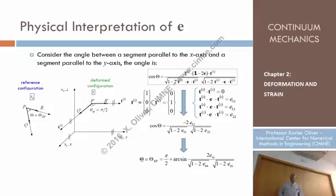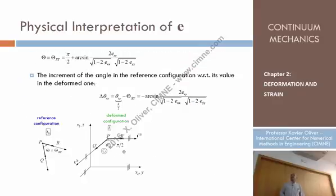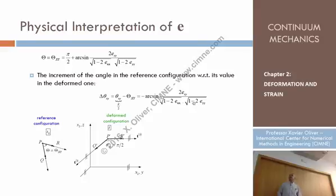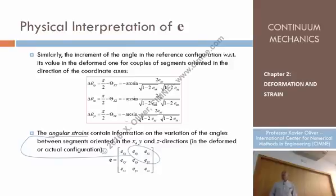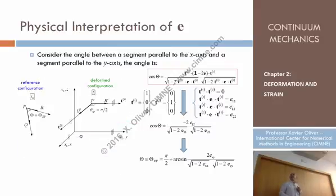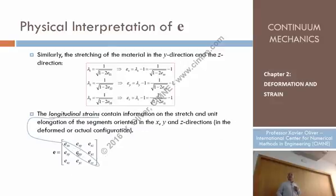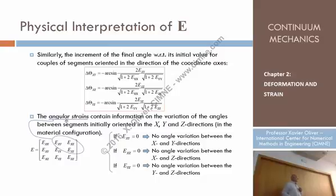The increment of the angle — which is the final angle (pi/2) minus the original angle — can be given by a formula with a minus sign in front that involves the off-diagonal term EXY and the diagonal terms EXX and EYY. These off-diagonal terms, both in the material and spatial cases, are called angular strains. The diagonal terms are called longitudinal strains, while the off-diagonal terms — which are symmetric — are called angular strains.